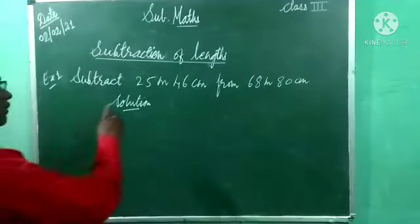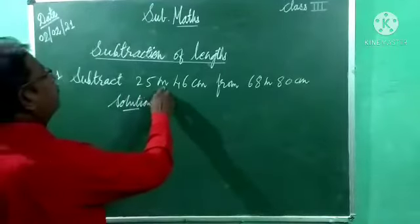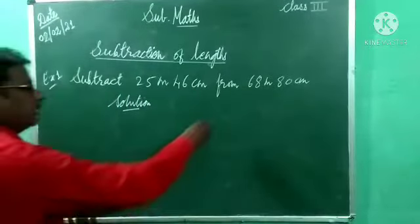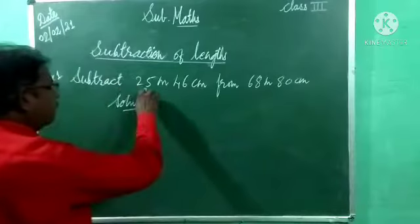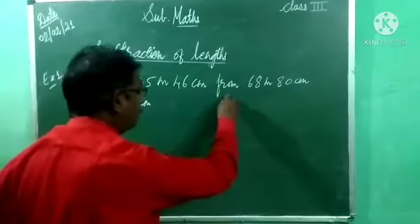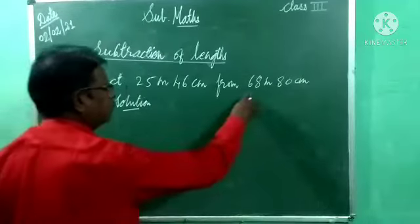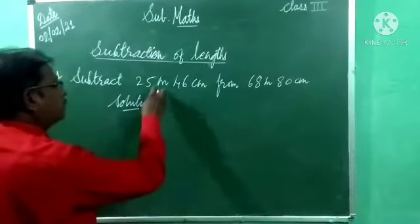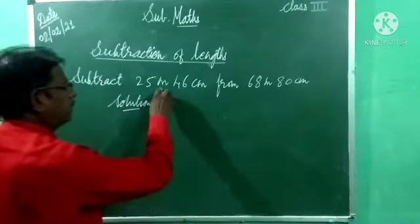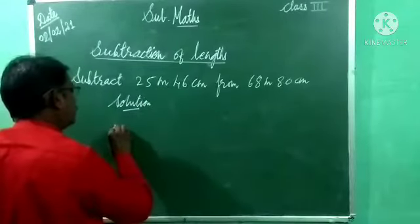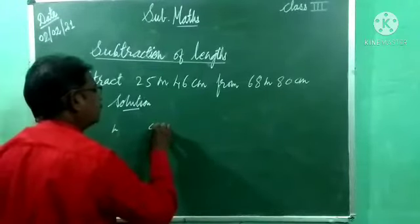While doing subtraction always keep in mind, bigger number we have to take up. Now tell me, 25 meter is bigger or 68 meter is bigger? Second number is bigger. Again two columns, unit of length given, meter and centimeter. Make two columns, meter first and second one is centimeter.